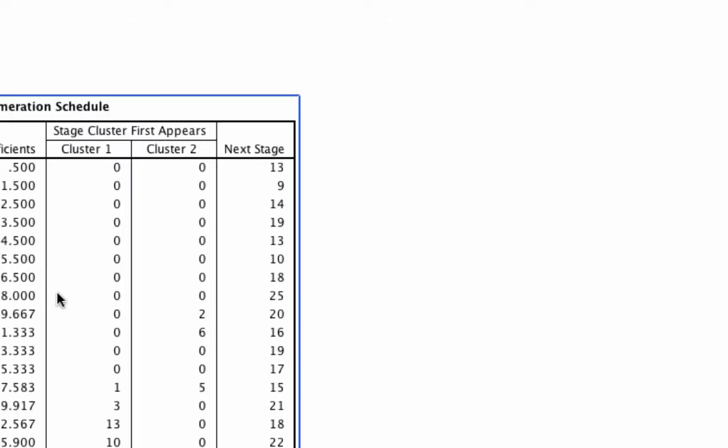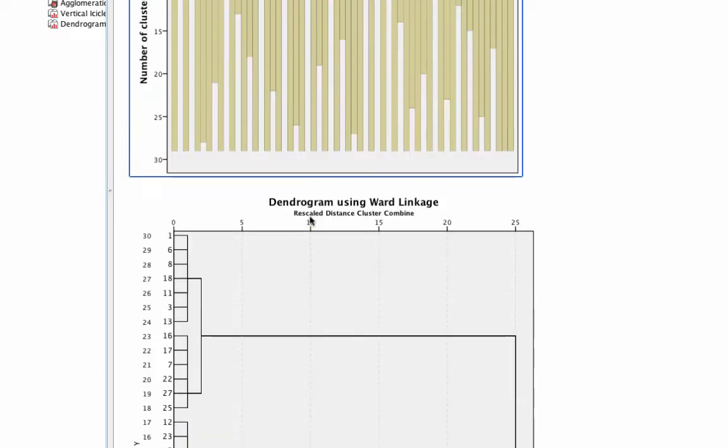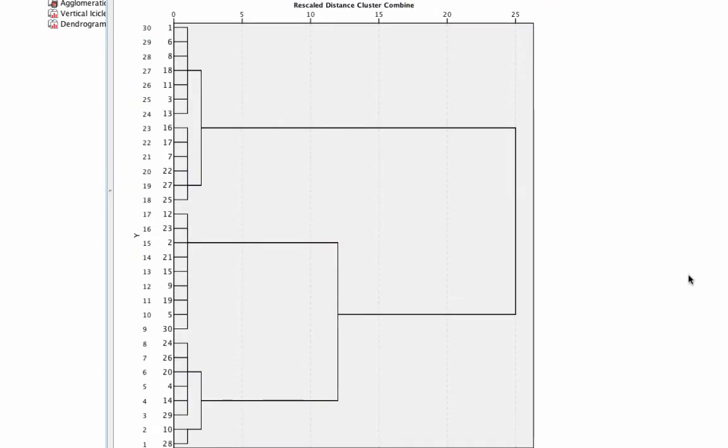For plots we ask for the dendrogram and for method we make sure to use the wards method. And if we run this we get the following dendrogram. It looks like either two or three clusters would be a reasonable solution. Let's go with three clusters just to see what we find.